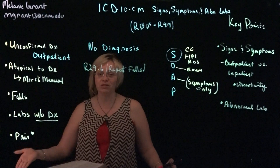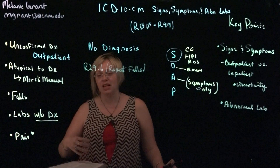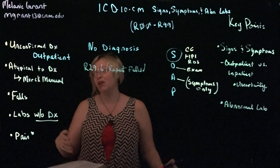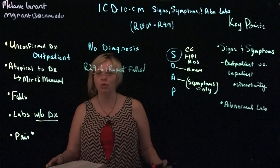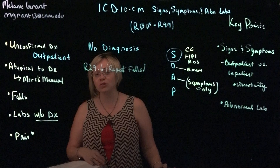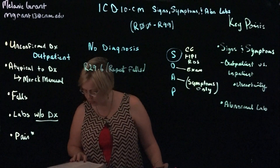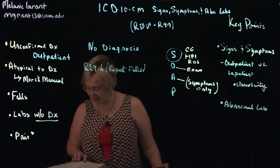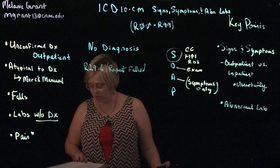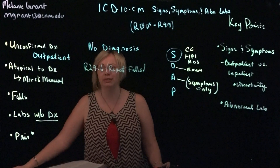If it's simply listed as 'they've been falling lately' without investigation, that goes under a Z code — Z91.81 — history of falling, when they've fallen in the past and are at risk for future falls, but we're not trying to find out information about why they're falling.